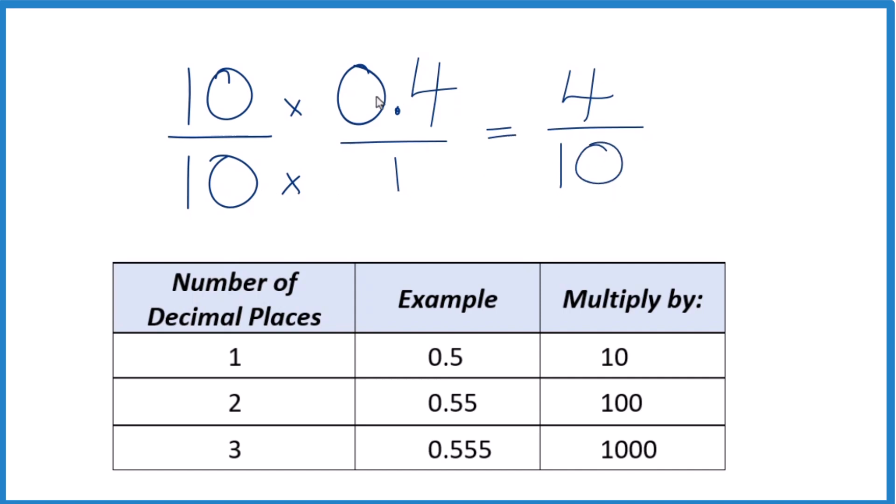The decimal 0.40, or 0.4, equals the fraction 4 tenths. We can reduce this, though, to simplest form.